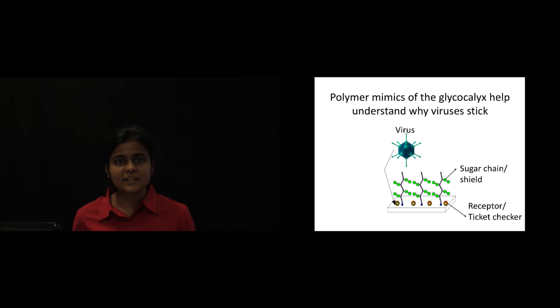One way to avoid this is by having a sufficiently dense sugar barrier. Our polymer surface helps us look at how different receptors and different sugar chains can affect virus binding, giving us clues to design countermeasures against infection.